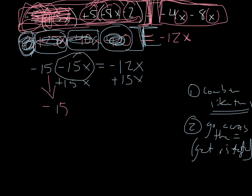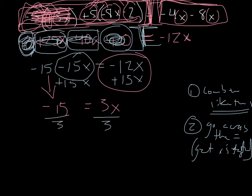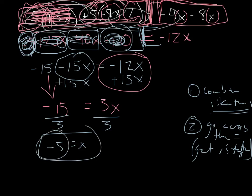And then we bring down our stuff. Negative 12x plus 15x would be positive 3x. Then we do our last step, which is divide by 3 to get x by itself. So that would be negative 5 equals x. And you could always check it by plugging negative 5 in for all your x's in the original equation. Toodles!